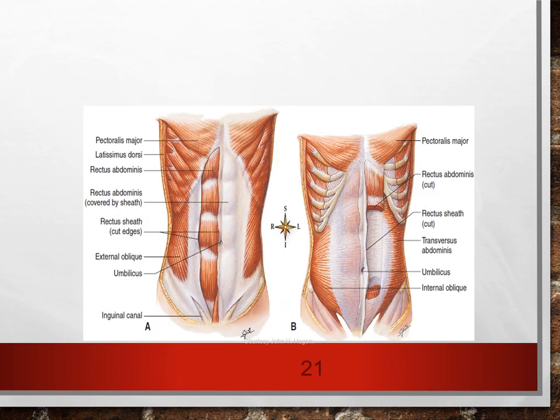To reconstruct a breast post-mastectomy, we can do something called a TRAM flap — transverse rectus abdominis musculocutaneous flap. Here you can get a really good image of the muscles of the abdomen: our internal and external obliques, the transverse abdominis, and the rectus abdominis.